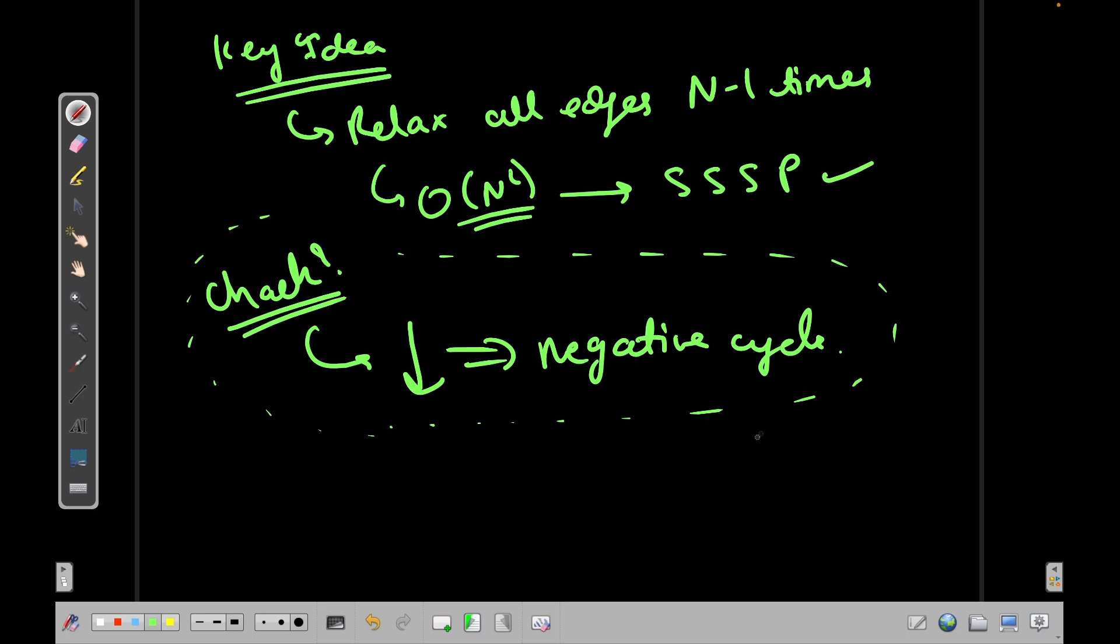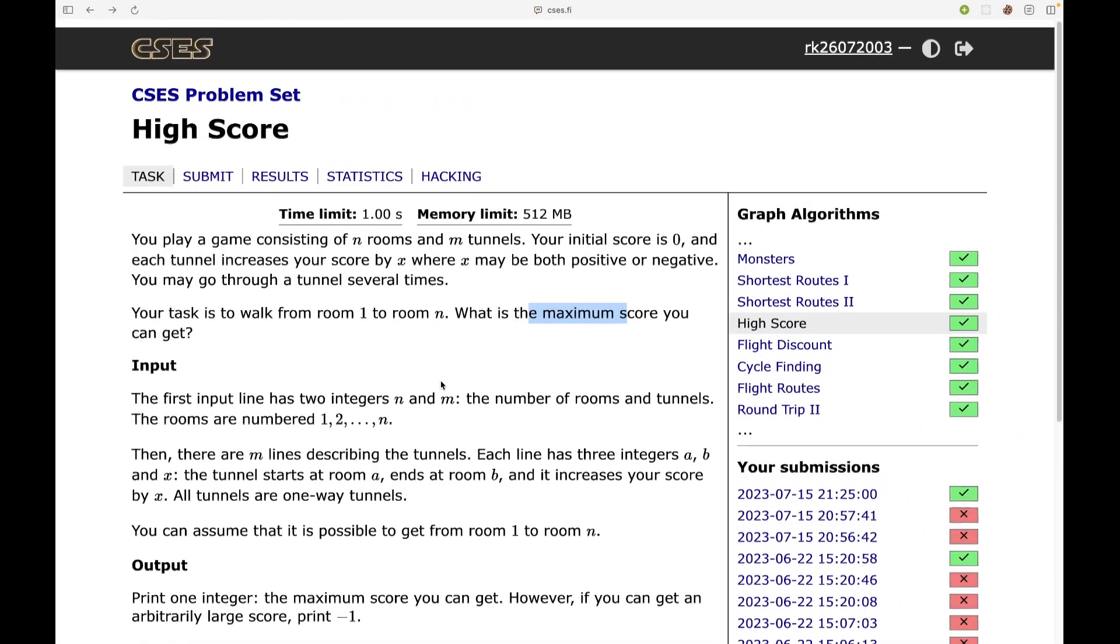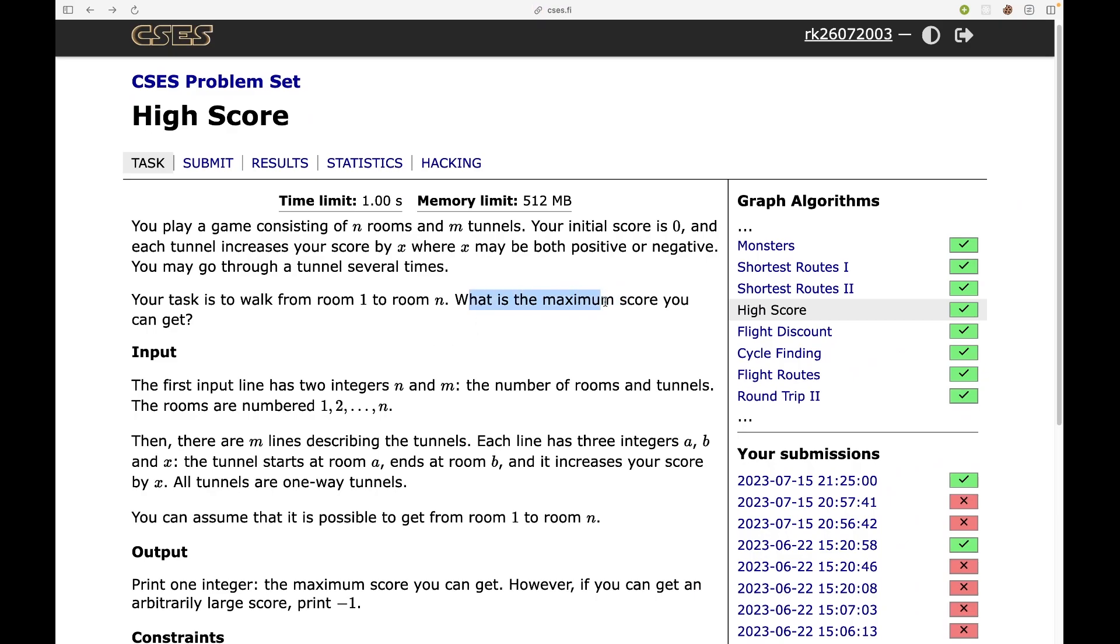So actually this problem is on Bellman-Ford. How? Because you might get confused that it is not talking about negative cycles, it is talking about the maximum that you can get. But there might be a case, let's say you are here and there is a positive cycle.